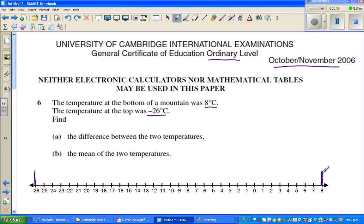So the question is what is the difference between these two temperatures. To understand the difference, from minus 26 to 0 degrees, you have a difference of 26 degrees. And from 0 to 8, you have a difference of 8 degrees centigrade. Pretty easy. So that is 26 plus 8, which is 34 degrees centigrade.